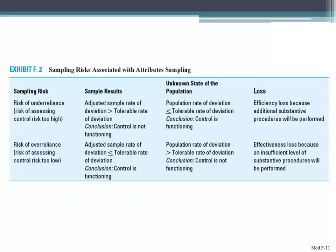With respect to the risk of over-reliance — assessing control risk too low — it's the opposite. Your adjusted sample rate of deviation is going to be less than or equal to your tolerable rate of deviation, and then you're going to assess that controls are functioning. There's an effectiveness loss, because you haven't performed a sufficient level of substantive procedures, and so it increases the likelihood that you won't detect a material misstatement in the account.